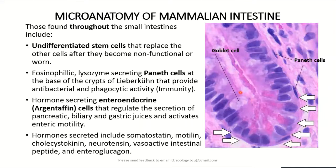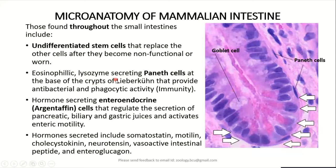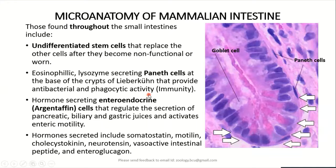Apart from goblet cells, we also find some undifferentiated stem cells, which can replace any other type of cell if it becomes non-functional or dies. We also come across Paneth cells, which are eosinophilic cells that secrete lysozymes or lytic enzymes into the crypts of Lieberkühn. These secretions provide immunity to the intestine, as these lytic enzymes are antibacterial. Paneth cells also exhibit phagocytic function.